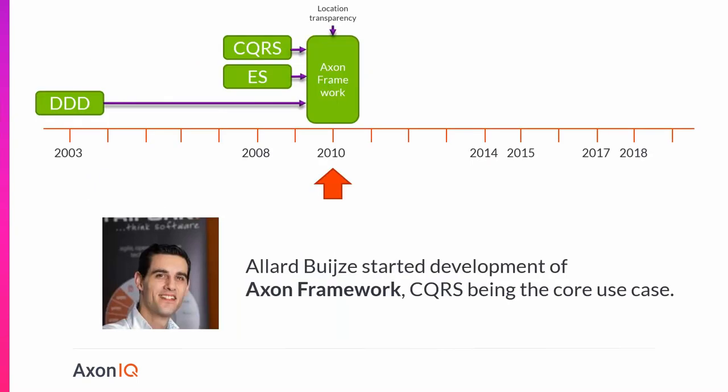So first, a little bit of history. If you look at Axon Framework, development started in 2010 — a long time ago. The good news is that Axon is not some kind of weird experimental technology; this is tried and tested. The core concepts are CQRS, event sourcing, and domain-driven design. I'm going to talk about these in more detail later.